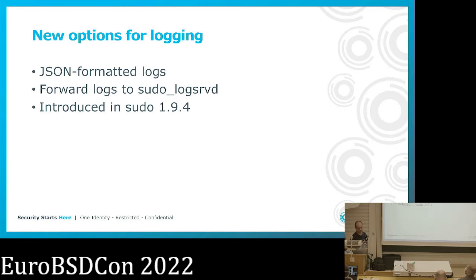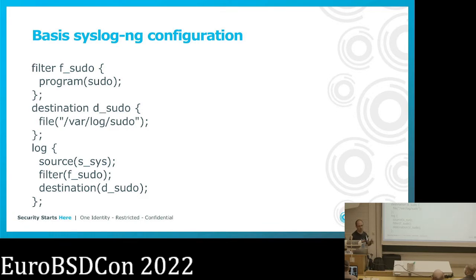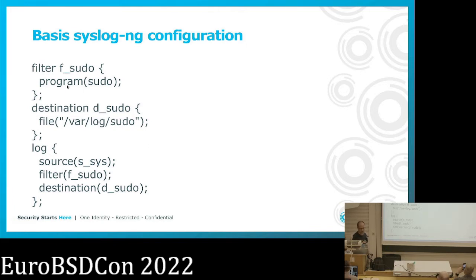As I'm coming from the syslog-ng world, my favorite new feature is about logging. Starting with sudo 1.9.4, you can turn on JSON-formatted logging in sudo. And now comes a kind of zigzag, as I will also show you a couple of syslog-ng configurations for sudo log messages. This is our starting configuration for syslog-ng — well, not the whole configuration, but the part for sudo logging.